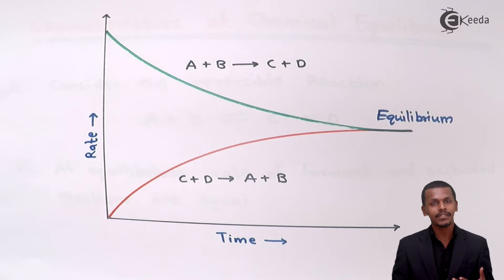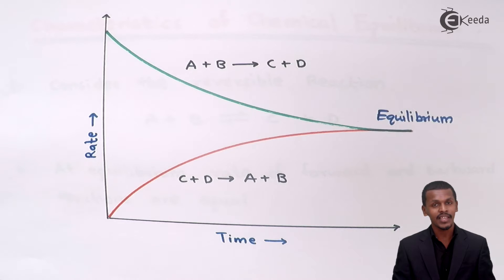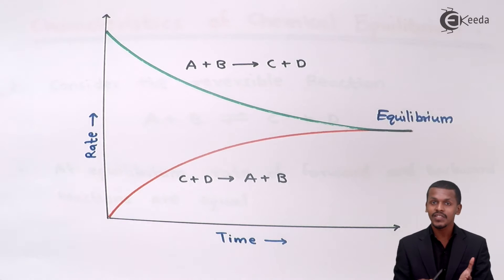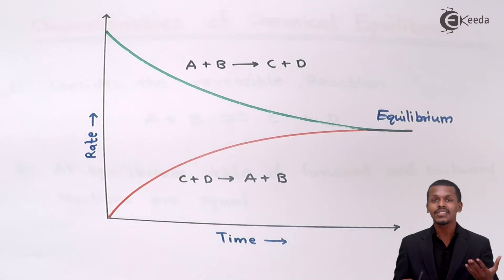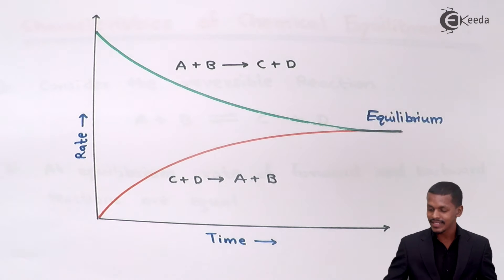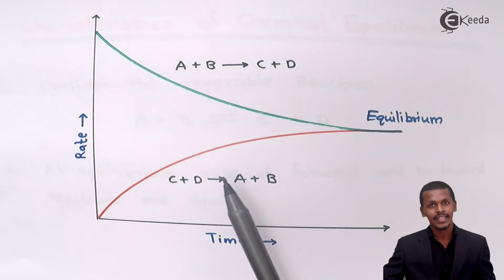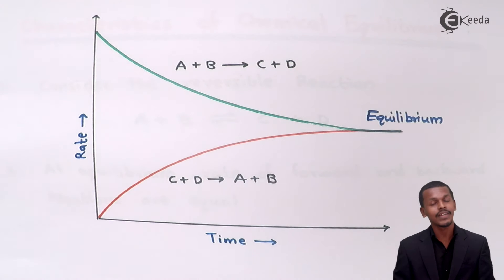Meanwhile, C plus D is the product formed. If C plus D is converting back into A plus B, the concentration of C plus D has been increasing as A plus B decreases. Therefore, the rate of the backward reaction goes on increasing.